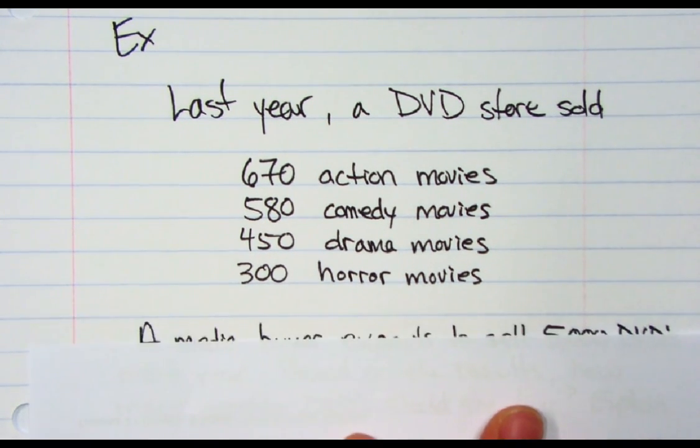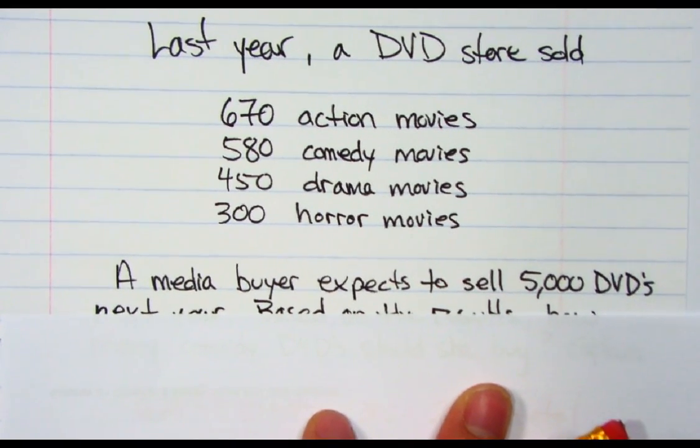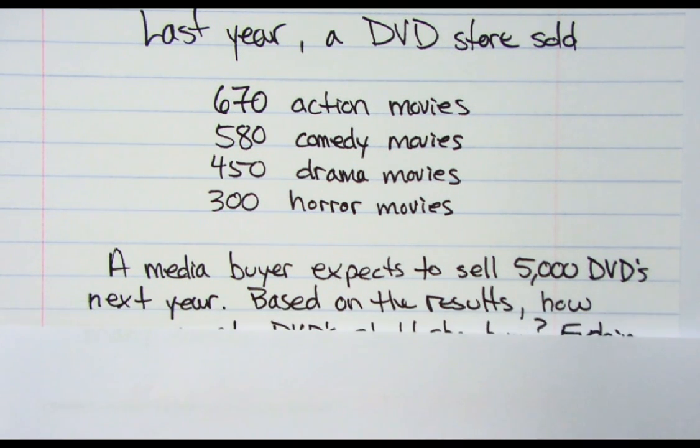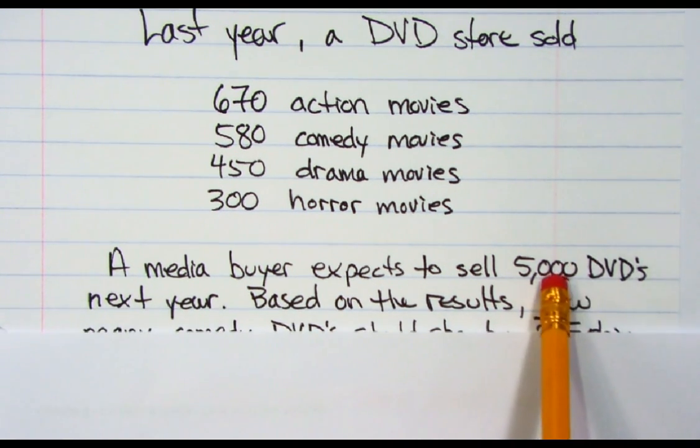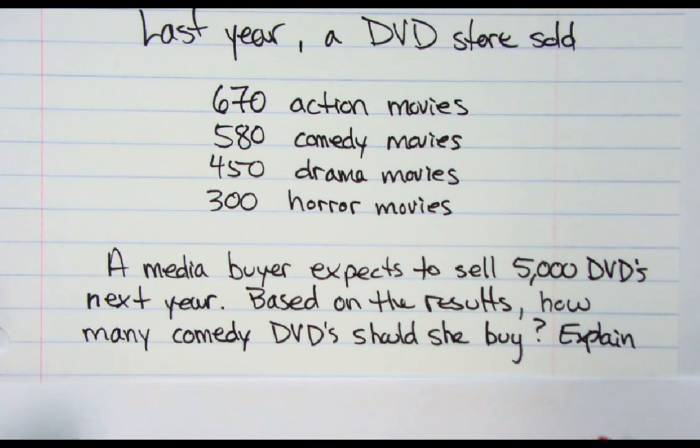The media buyer, someone who actually goes and buys all the movies they're going to sell, expects to sell 5,000 DVDs next year. Based on the results, how many comedy DVDs should she buy and explain?